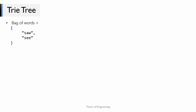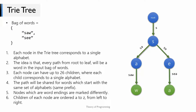To keep things simple, consider a bag of words with 'saw' and 'see'. How do I draw a Trie tree for this? Let's go through the rules one by one and see how they have been applied to the Trie tree figure. The basic structure of a Trie tree is that each node corresponds to a single alphabet, as you can see in the figure — every node except the root corresponds to some alphabet. Every path from root to leaf will be a word in the input bag of words.